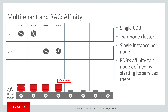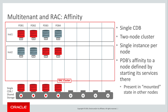We begin by discussing the topic of affinity — in other words, in which node or nodes of the cluster is each of these PDBs open? Technically, the affinity of a PDB to a database instance in the RAC cluster is defined by opening the services of the PDB in that instance. Each PDB is visible in every node of the cluster; however, in nodes in which it is not open, it will be seen in mounted state, which is about as closed as you can get.